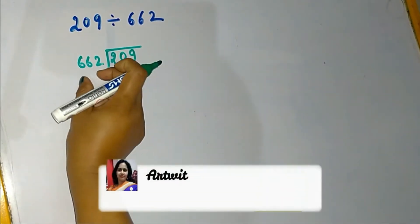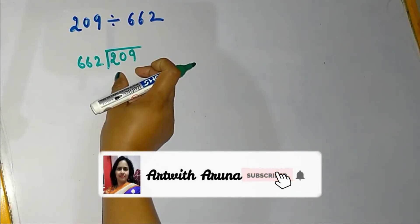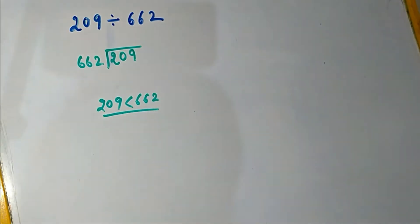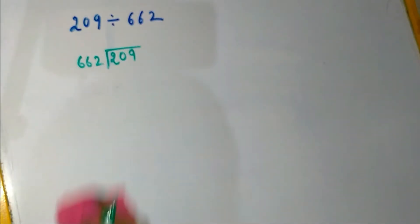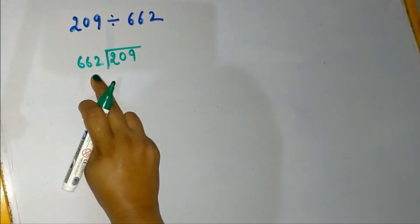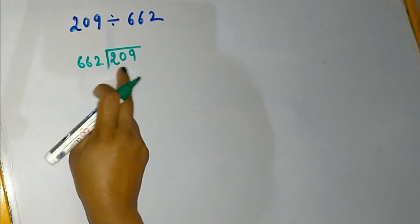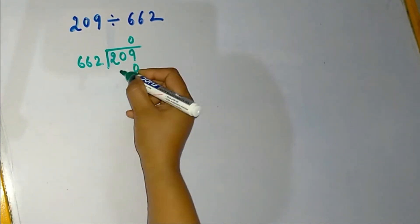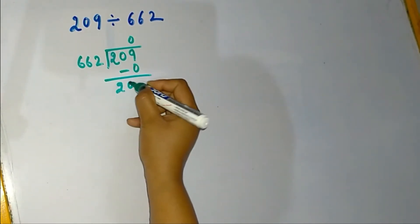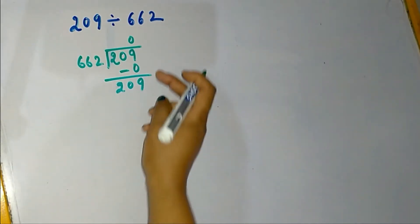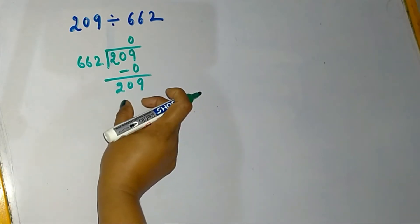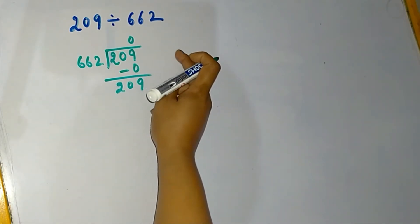We need to compare this 3-digit dividend with this 3-digit divisor. We know that 209 is less than 662, so it is not possible to have 209 in the table of 662. So we go for 0 times 662, which is 0, and we get 209 back. This 209 is part of our solution and we are done with all the digits present in the question.